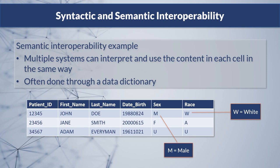Recall from our definition of interoperability — the information exchanged between systems must be usable. Using this same Excel spreadsheet example, semantic interoperability is the way in which systems interpret and use the content sent in each cell. The sending and receiving systems may not store data in the same way, but semantic interoperability ensures that both systems will understand that a sex value of M means male and a race value of W means white. A common way of achieving this is by the sender sharing a data dictionary with the receiver — a collection of data element names, definitions, and related attributes commonly used to communicate both the structure and content of the data being captured.